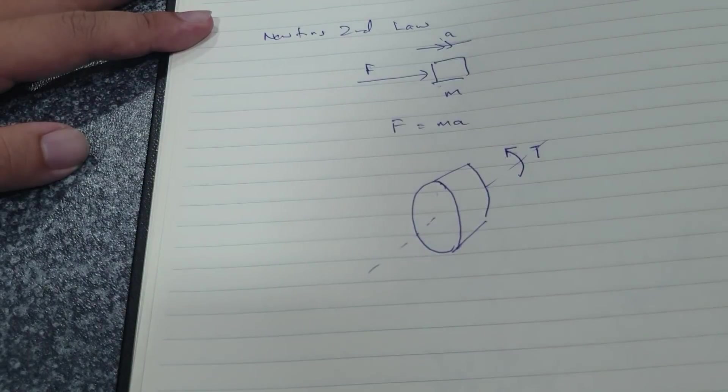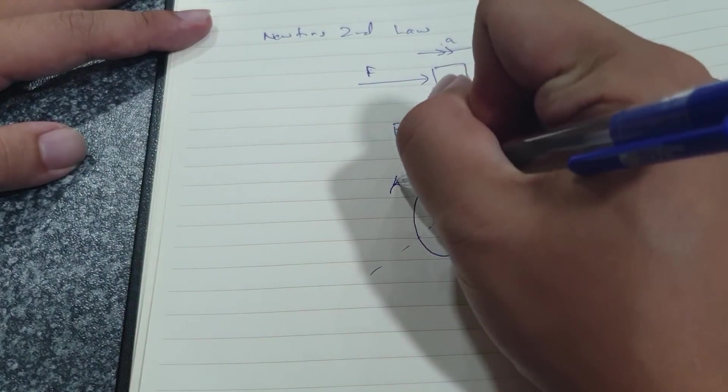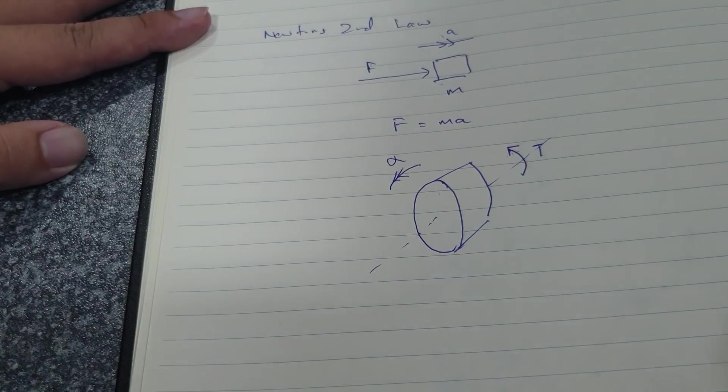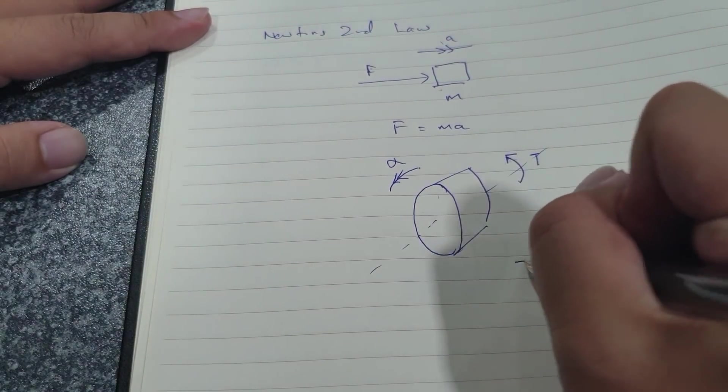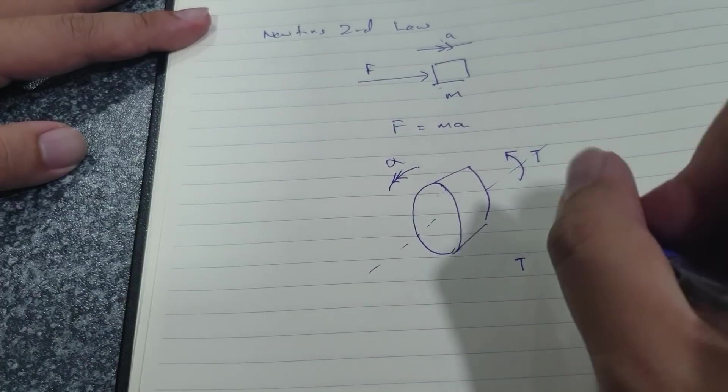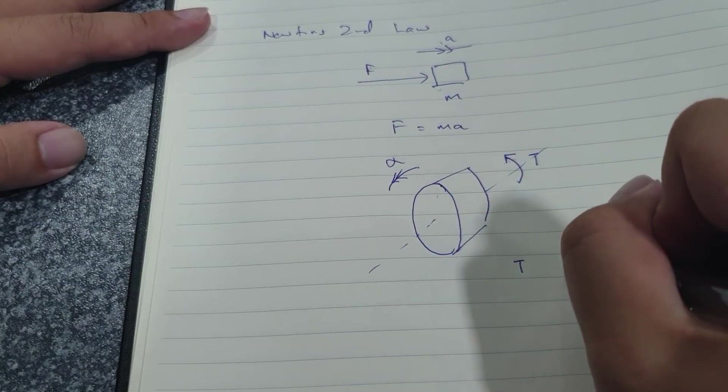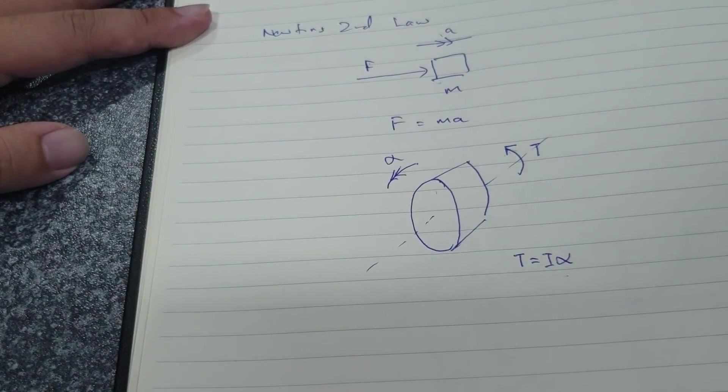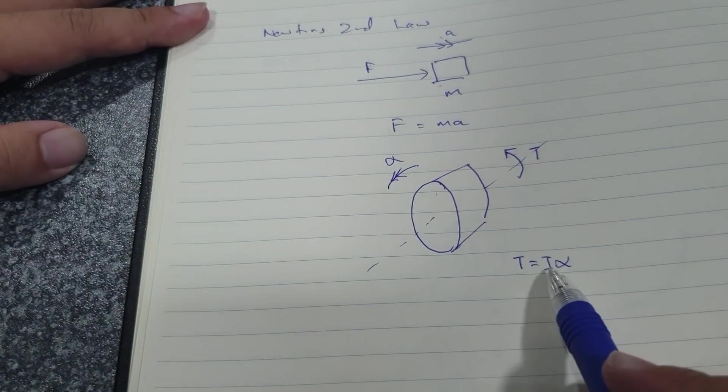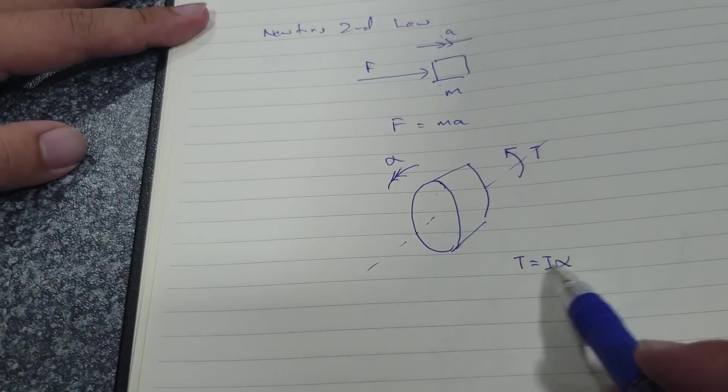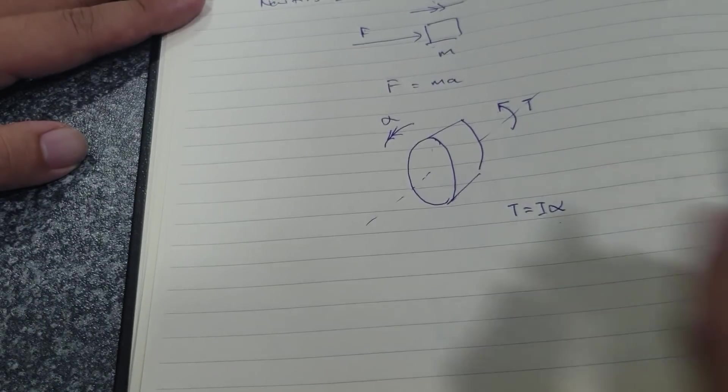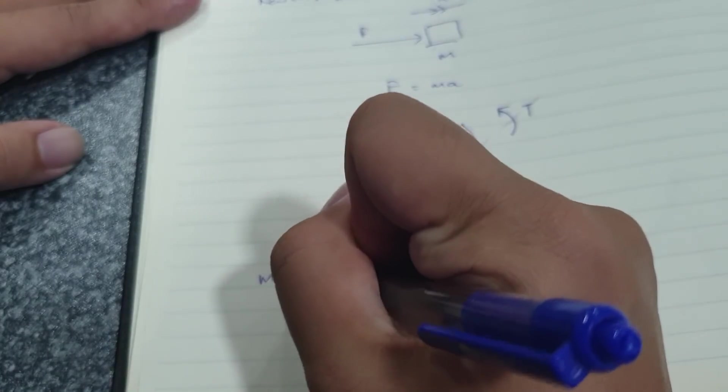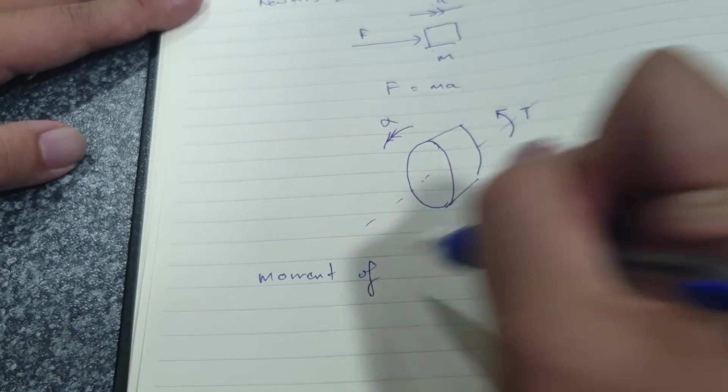And you apply a torque around its center line and then it accelerates with this following angular acceleration. So this torque and the angular acceleration, they are connected by this formula which is torque equals to moment of inertia times your angular acceleration. So yes, what then is this moment of inertia?